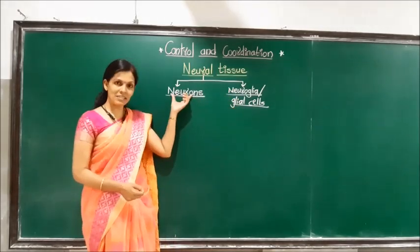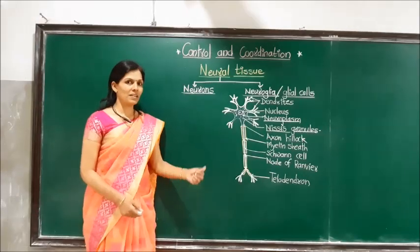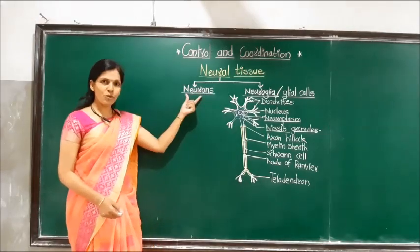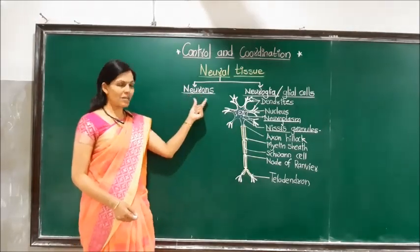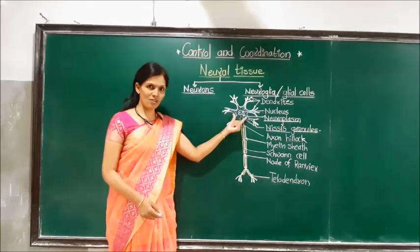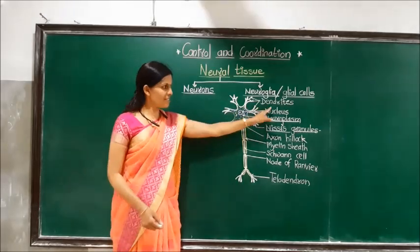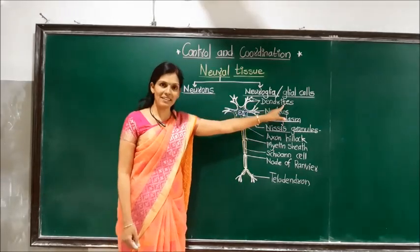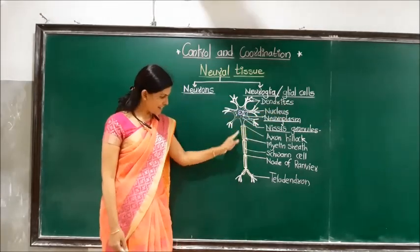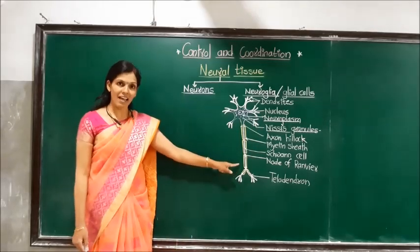Now we will see the structure of neurons. Neurons are made up of the cytone or cell body, dendron — also called dendrites — and a single process called the axon.